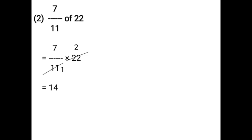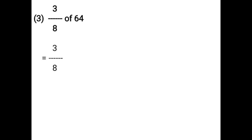3 upon 8 of 64. That is equal to 3 upon 8 into 64. Using the cancellation method: 8 ones are 8, 8 eights are 64, that is equal to 3 eights, which is 24.